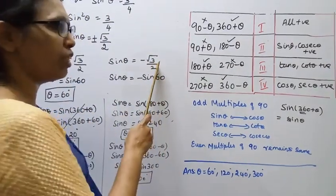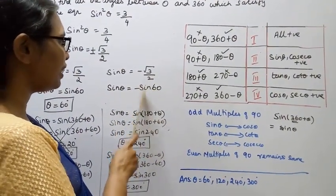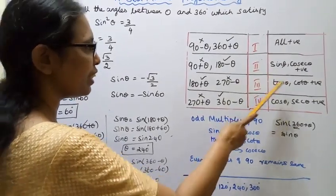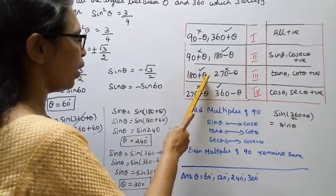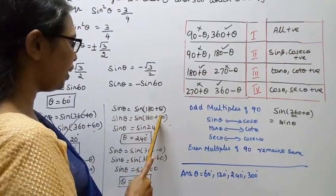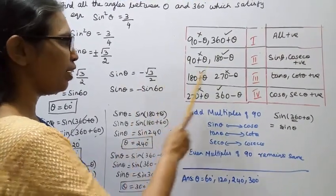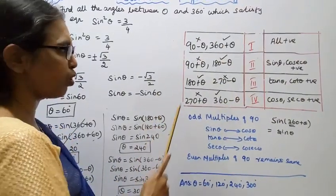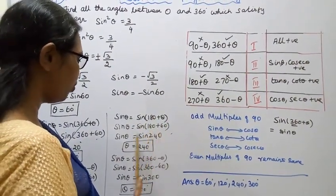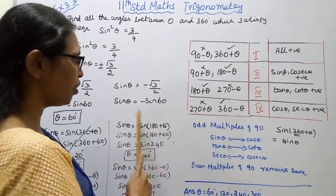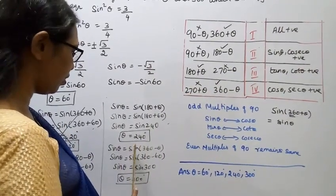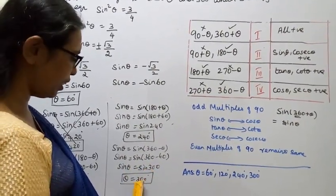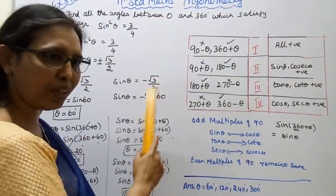For the negative case: sin theta equal to minus root 3 by 2, which equals minus sin 60. Since sin is negative, the angles are in the third and fourth quadrants. In the third quadrant: 180 plus 60 equal to 240 degrees. In the fourth quadrant: 360 minus 60 equal to 300 degrees. Therefore theta equal to 240 and theta equal to 300 degrees.